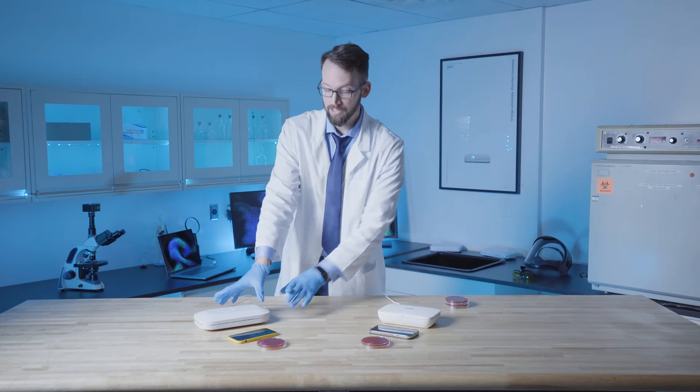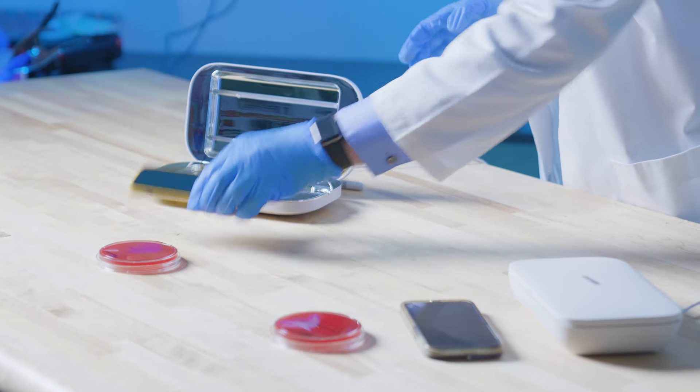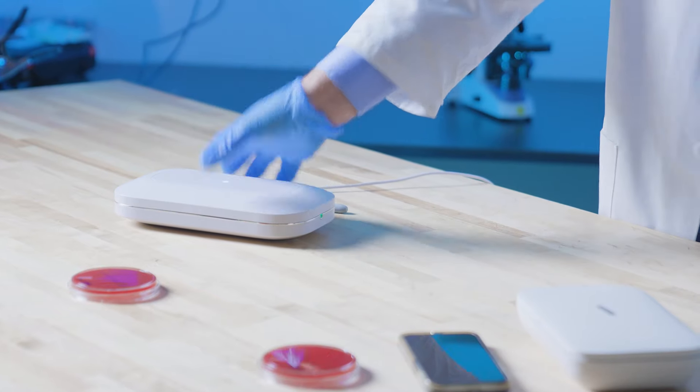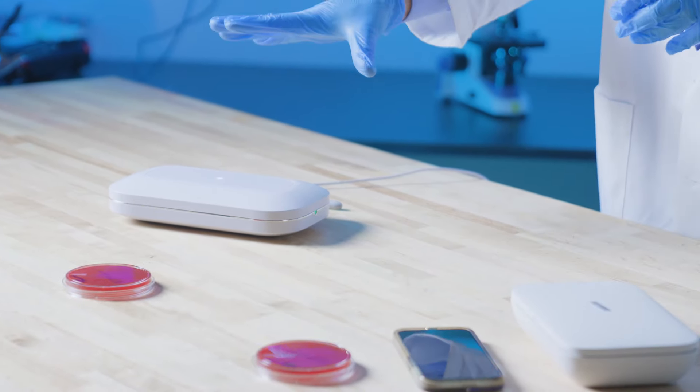Now we put them in the UV sanitizers, put this one in PhoneSoap, close the lid, and the light turns on for a five minute cycle.